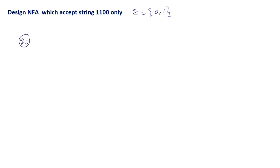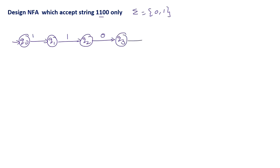The starting state is q0, and the first symbol must be 1, so it reaches the non-final state q1. The second symbol must be 1, reaching state q2. The third symbol must be 0, so q2 on 0 moves to the non-final state q3. q3 on 0 reaches the final state q4. This is a simple and easy example.